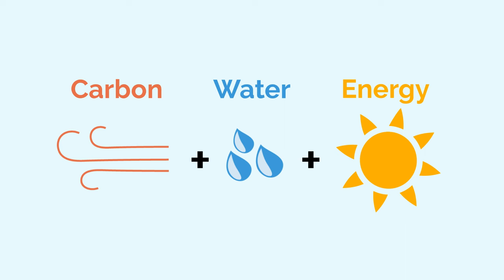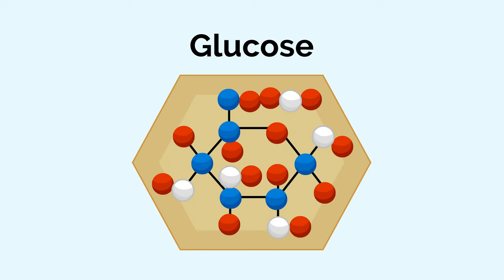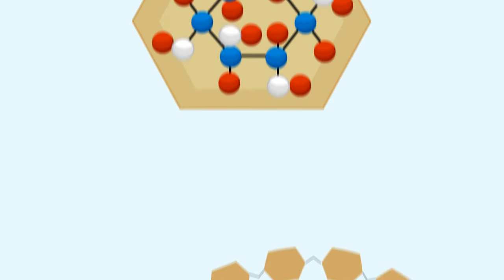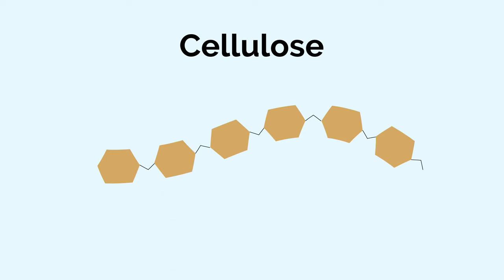Carbon, water, and energy are used in this process to make glucose, which is a type of sugar. Glucose molecules can then combine to form long chains called cellulose, which are used to build plant structures, like cell walls.